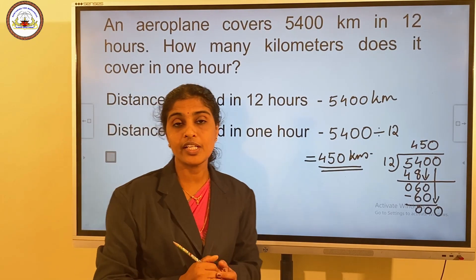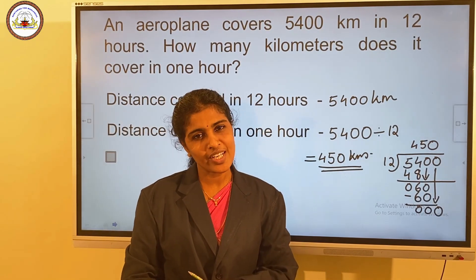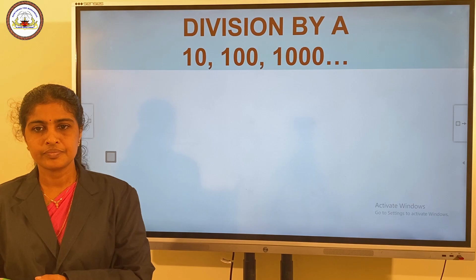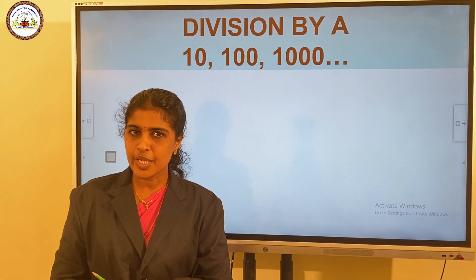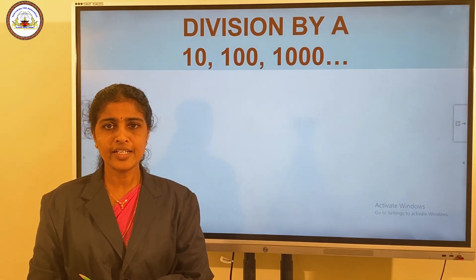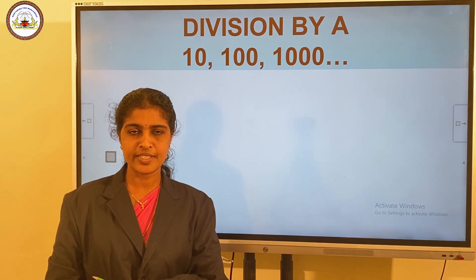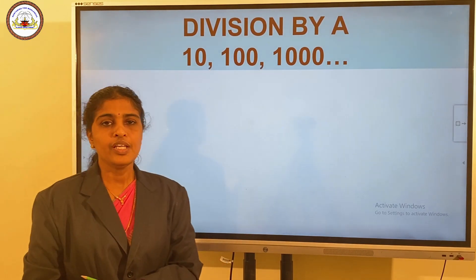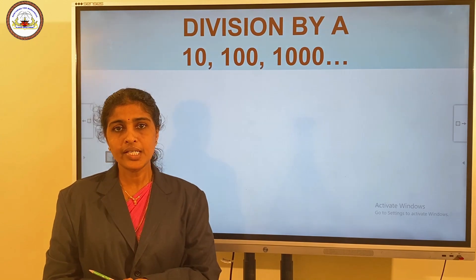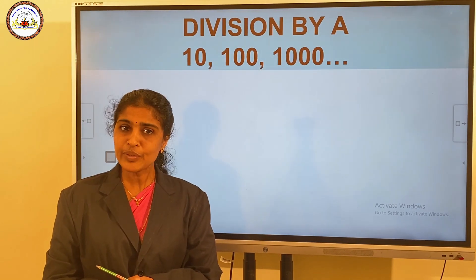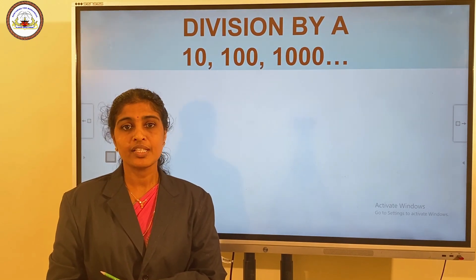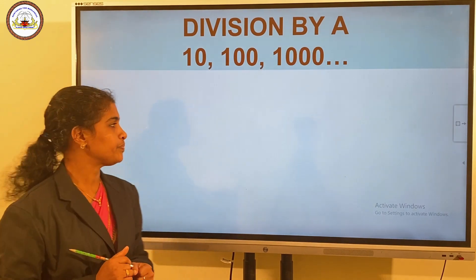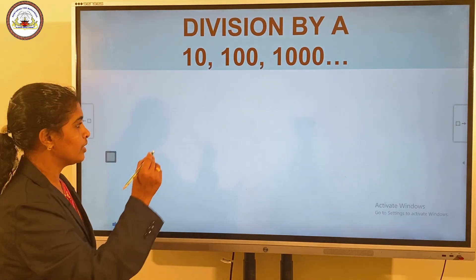So the distance covered in 1 hour is equal to 450 kilometers. Now, we have division by 10, 100, 1000, etc. — that is, the multiples of 10. If we divide a number by 10, we get the quotient by removing the ones digit, and the ones digit is the remainder.